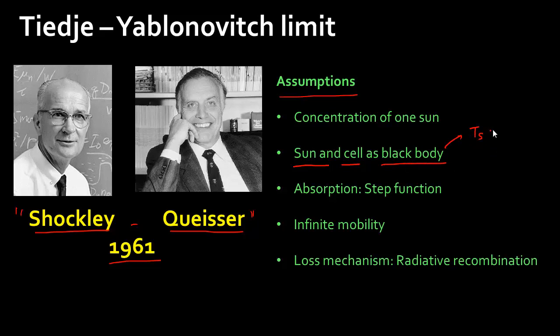They assumed the sun to be a black body — that the radiation coming from the sun is equivalent to a black body at a temperature of 6000 Kelvin. We know that the actual radiation which comes from the sun has certain parts of the spectrum absorbed due to the atmosphere, so this needs to be corrected for.